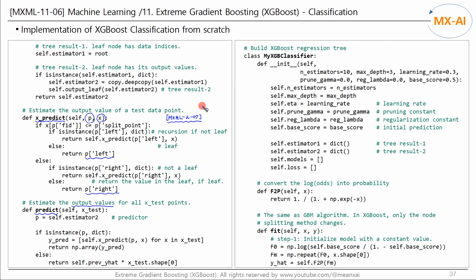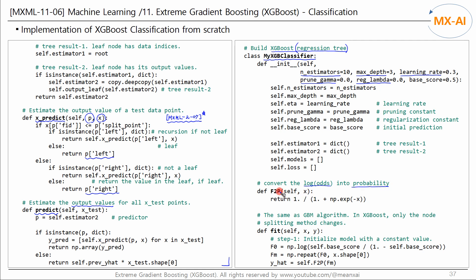So far, we have created a base learner for XGBoost classification. Now use this base learner to implement the XGBoost classification. Since the residuals are learned, a regression tree is also used for classification. The class name is MyXClassifier. Set the total number of trees and the depth of each tree, and set the learning rate, pruning constant, and regularization constant. Then write a function that converts log odds into probability — this is the logistic function.